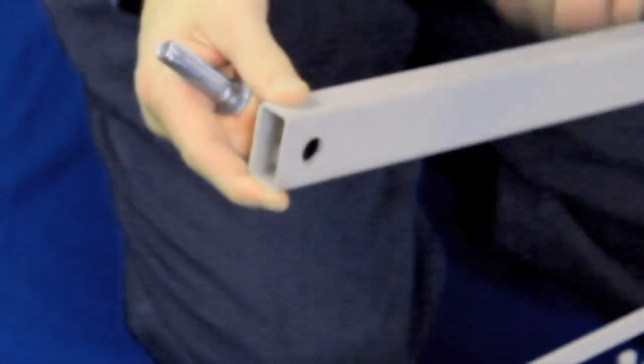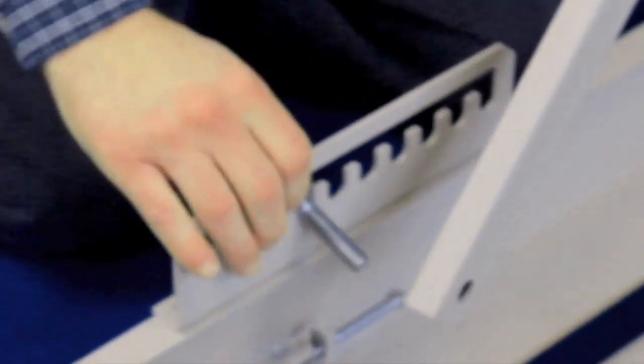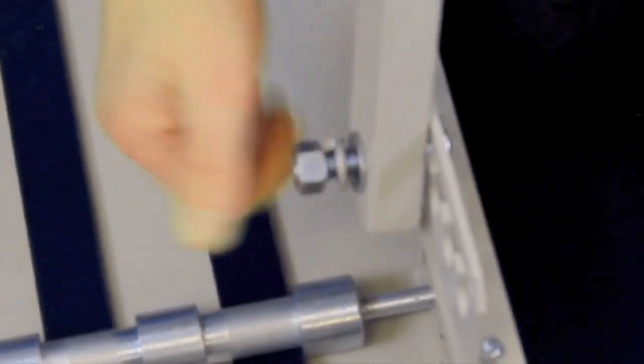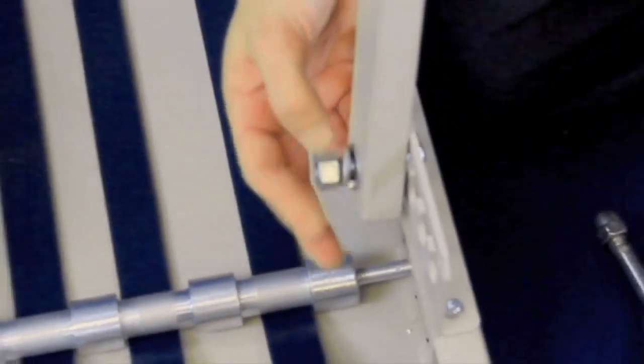Locate one of the back legs and align it with the adjustable back bracket. Place the leg to the inside of the bracket and slide the bolt into the slot through the leg and hand tighten the lock washer and nut. Locate the second back leg and repeat the same process with the bolt, lock washer, and nut.